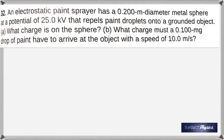The next one talks about an electrostatic paint sprayer which breaks paint into small droplets so you can have them deposited uniformly over a surface. It has a 0.2 meter diameter metal sphere at a potential of 25 kilovolts that repels paint droplets onto a grounded object. The potential difference is 25,000 minus 0 which is 25,000. You are asked to find the charge on the sphere.